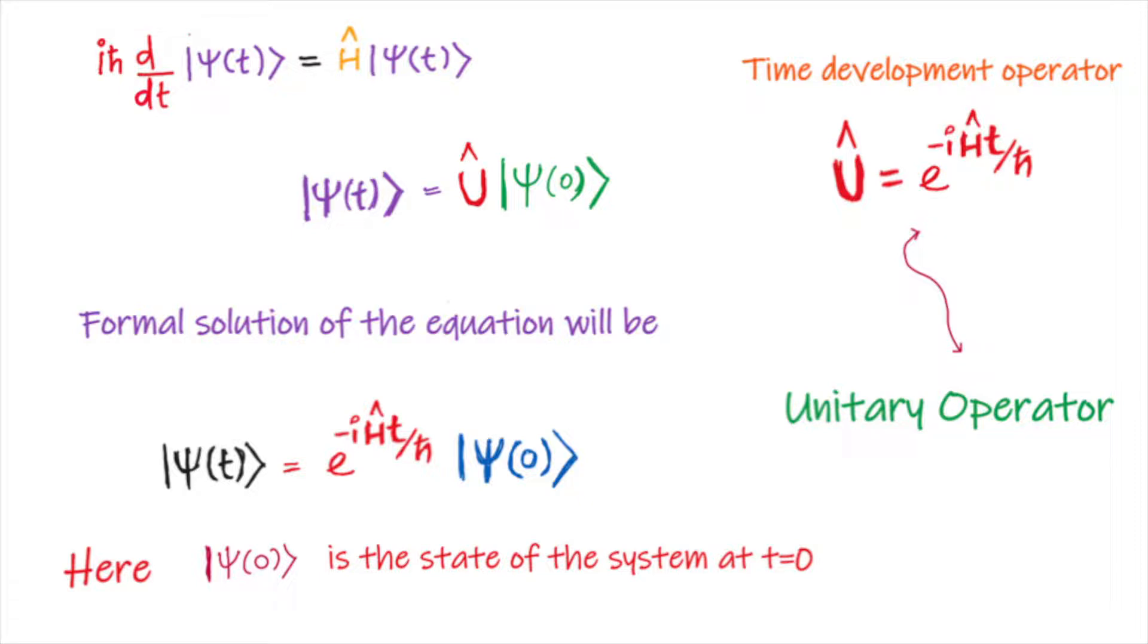The two states ψ(t) and ψ(0) can be related by means of a linear operator U such that ψ(t) = U|ψ(0)⟩, where U is an operator which is known as time evolution operator or time development operator. Here ψ(0) is the state vector of the system at t = 0.